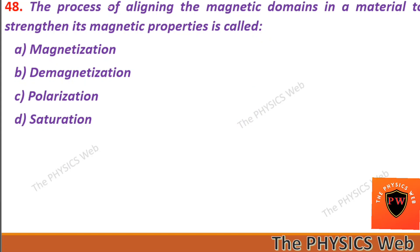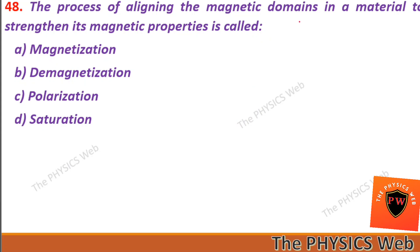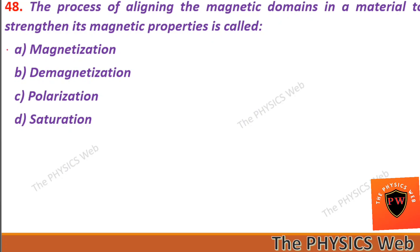Next, question forty-eight: the process of aligning the magnetic domains in a material to strengthen its magnetic property is called magnetization. So A is your correct option.